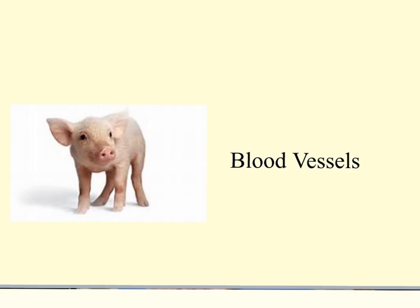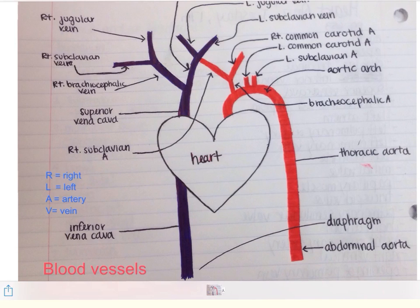Every time we have a branch or a blood vessel move from one part of the body to the next, we will see a name change. Before we begin with the circulatory system of the fetal pig, let's review the circulatory system of the human body.